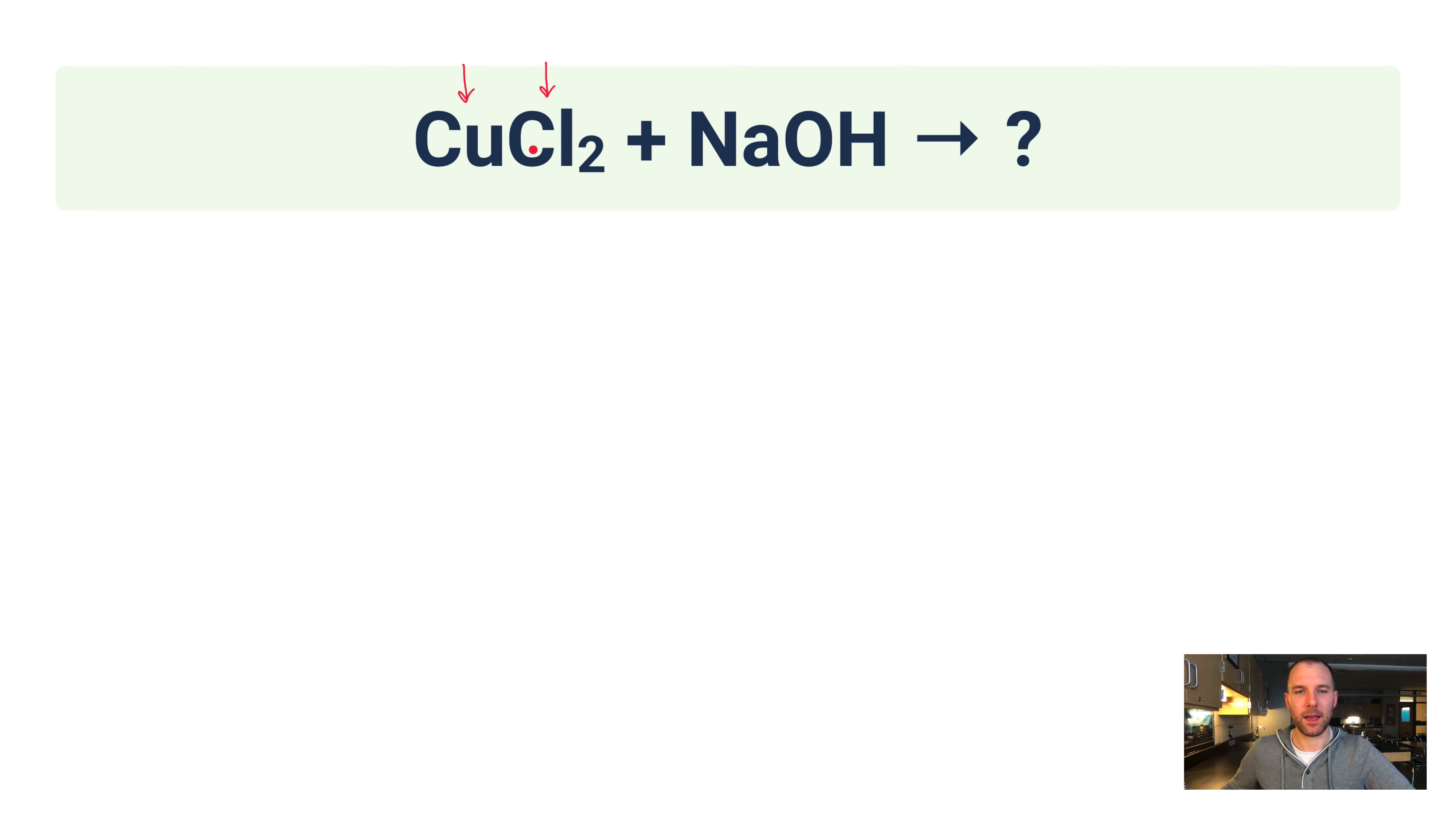Chloride is in group 17, and therefore chloride will always have a minus one charge. There are two of them to balance out whatever the charge on this one copper ion is. And so therefore that must mean that this is copper plus two, because two and two negative ones would neutralize this compound. So this is copper 2 chloride.